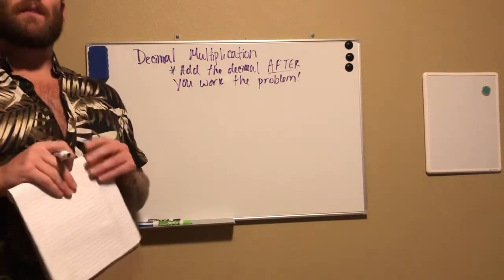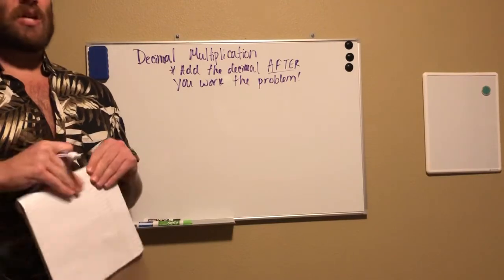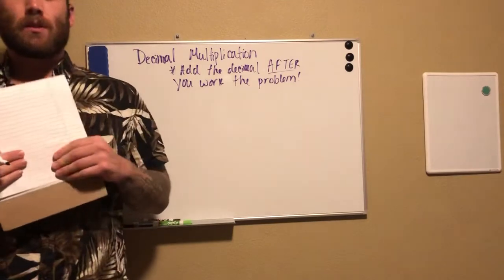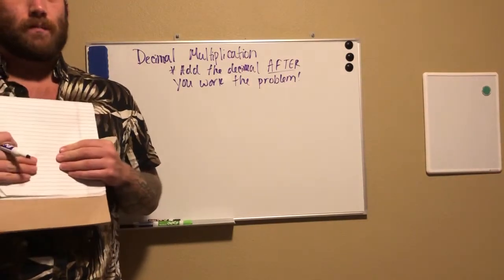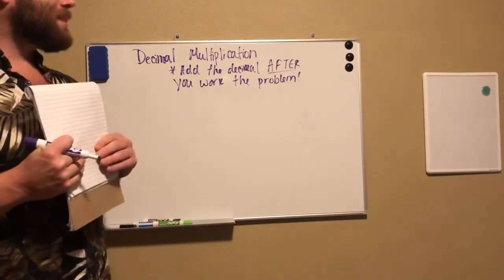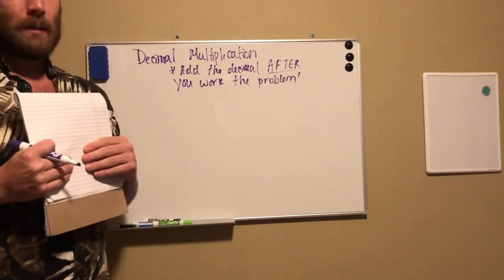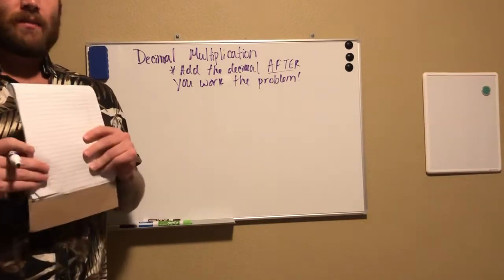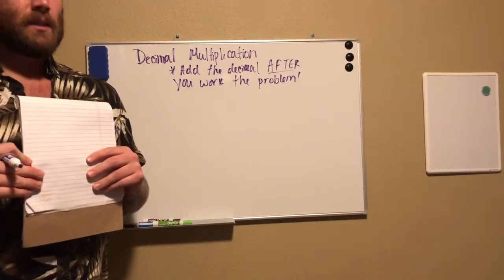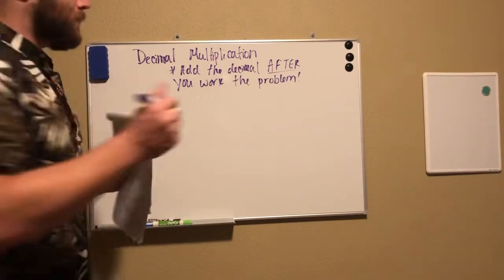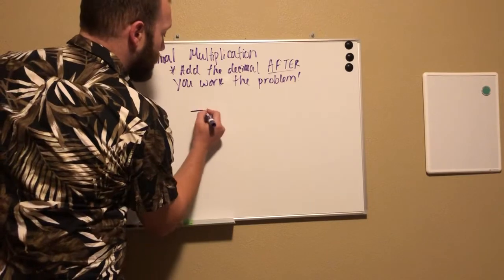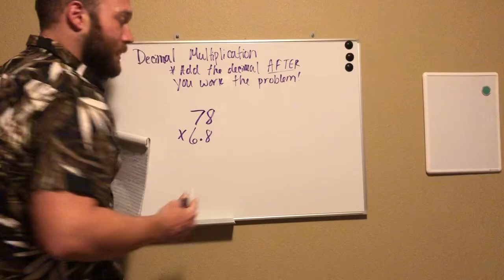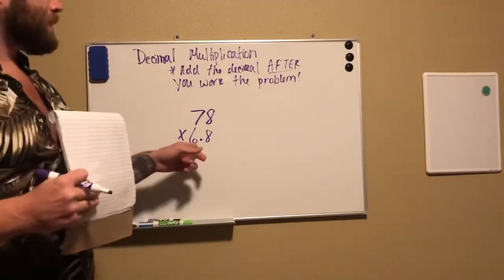Hello, here we are, our first day of distance learning. So let's start things off with decimal multiplication. This is the first part of your worksheet. Remember, you add the decimal after you work the problem. The first problem on your worksheet is 78 times 6.8. Remember, anything that comes after the decimal we say 'and' the place value. There's one digit after the decimal, so that is tenths. So we have eight tenths.